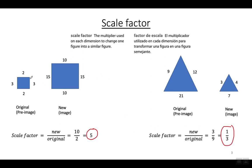So again: if it gets bigger, you multiply by a scale factor bigger than 1. If it gets smaller, you multiply by a scale factor between 0 and 1 — usually a fraction or a decimal.